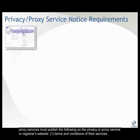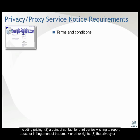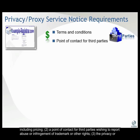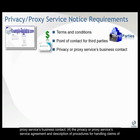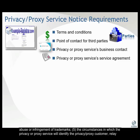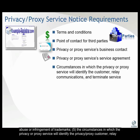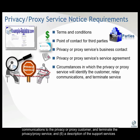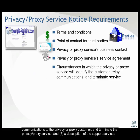Privacy and proxy services must publish the following on the privacy or proxy service or registrar's website: 1. Terms and conditions of their services, including pricing. 2. A point of contact for third parties wishing to report abuse or infringement of trademark or other rights. 3. The privacy or proxy service's business contact. 4. The service agreement and description of procedures for handling claims of abuse or infringement of trademarks. 5. The circumstances in which the privacy or proxy service will identify the customer, relay communications to the customer, and terminate the privacy or proxy service.